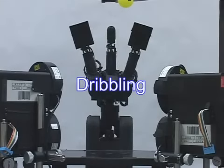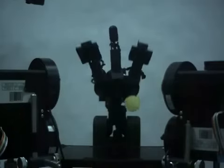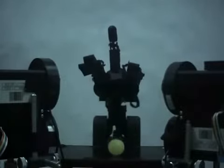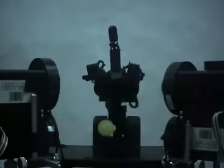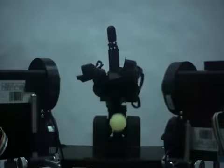This is dribbling. High-speed active control enables the maintaining of a periodically stable motion. We call it dynamic holding. The dribbling period is around 100 milliseconds.